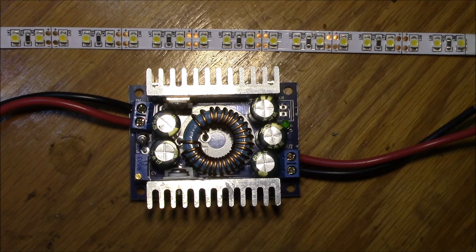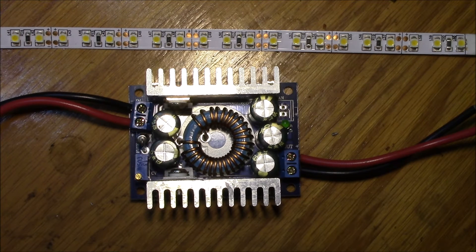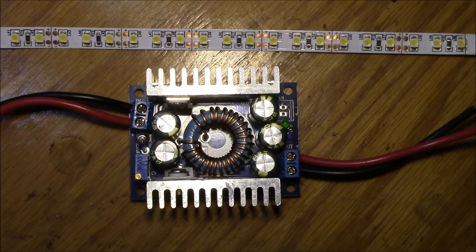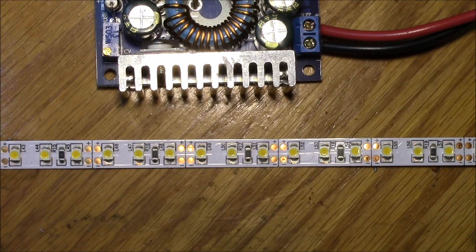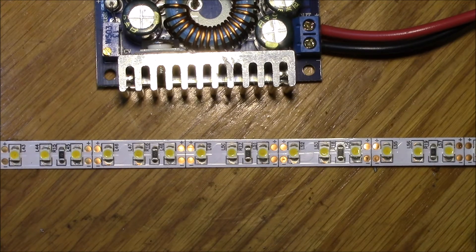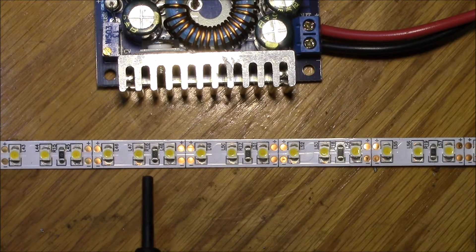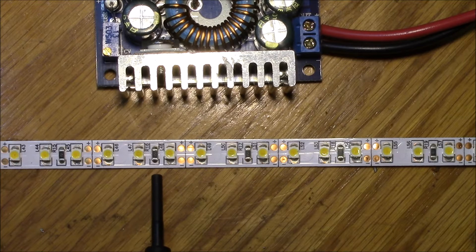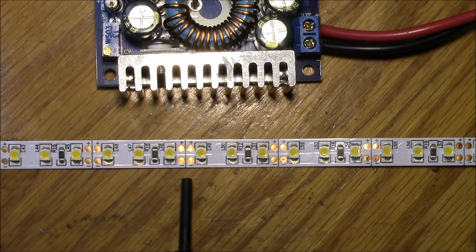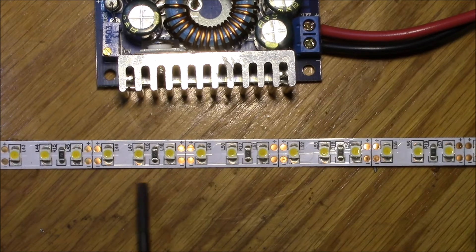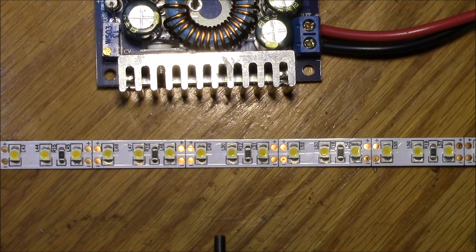Following up from the introduction video, this time I'll look at how the converter works with a real load. This first test will be to power a common 12 volt LED strip light. These lights typically have three series LEDs and a current limiting resistor in a segment, and there are multiple segments arranged in parallel.